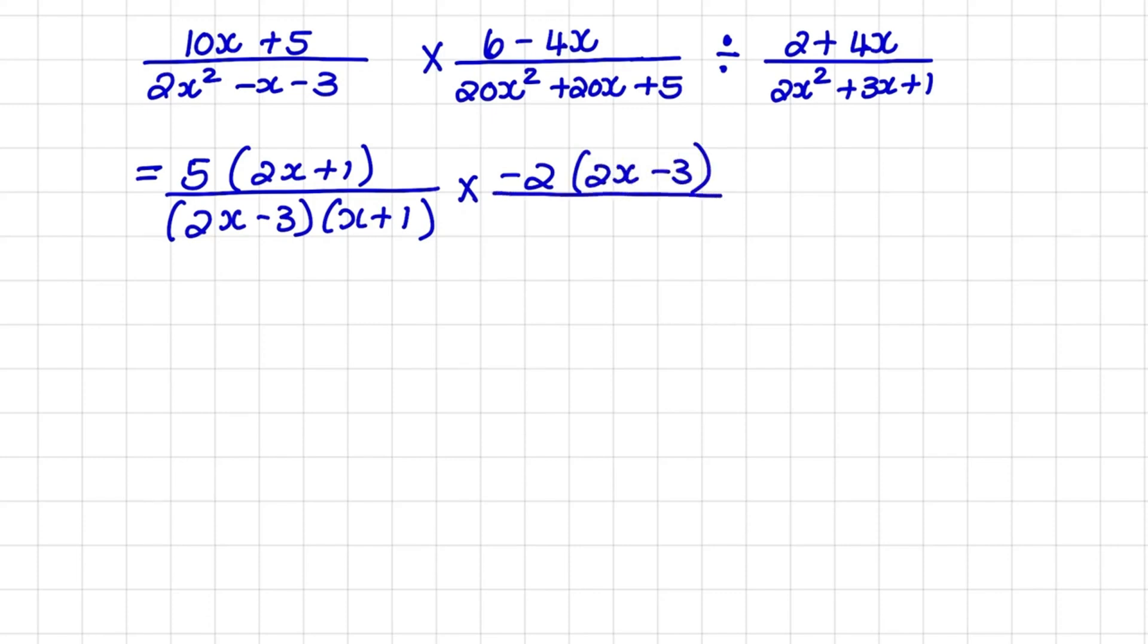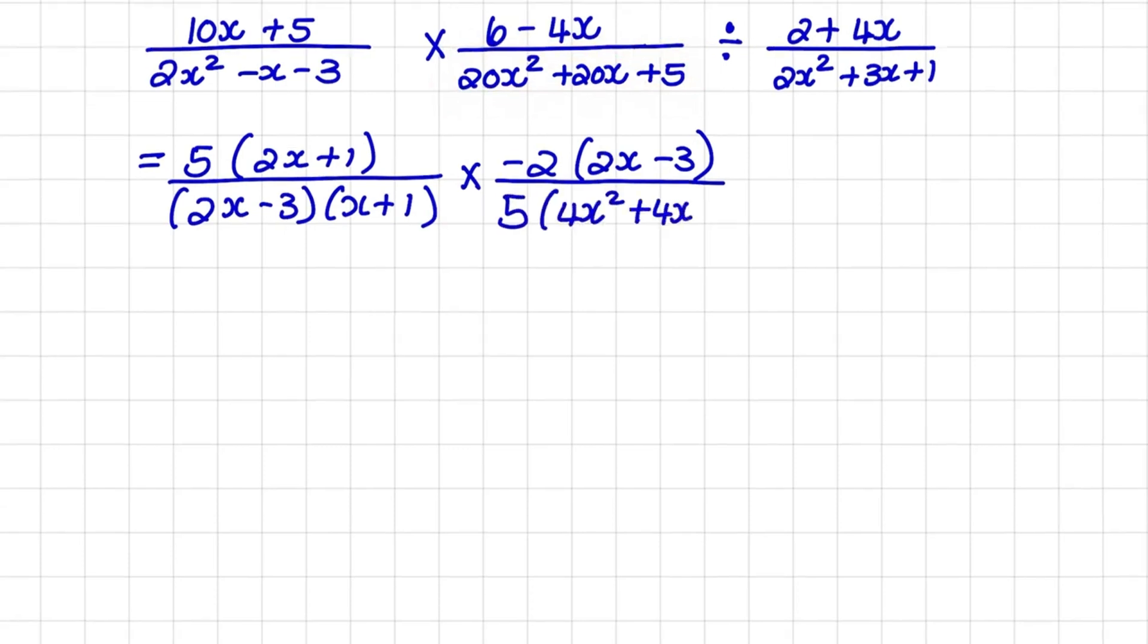Moving on to the denominator, again I can take out a greatest common factor of 5. So if I take out 5, I'm left with 4x squared plus 4x plus 1, and I'll close the bracket.